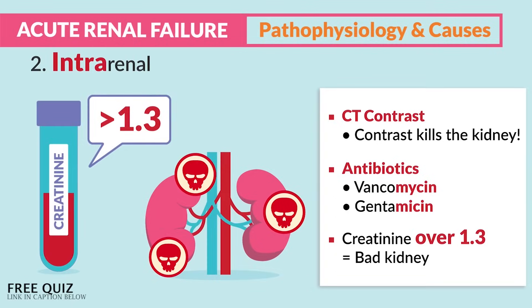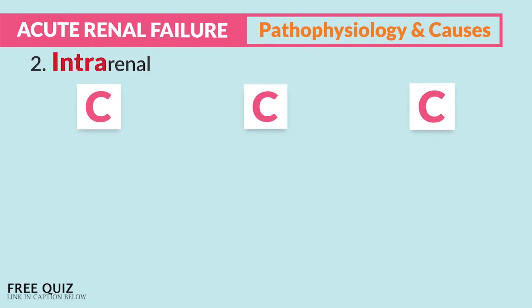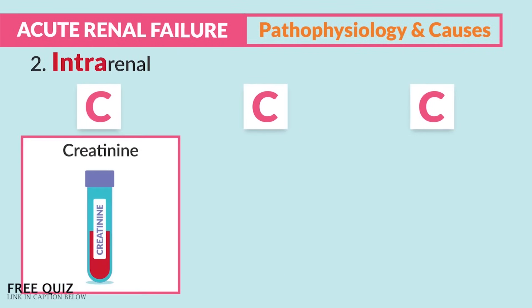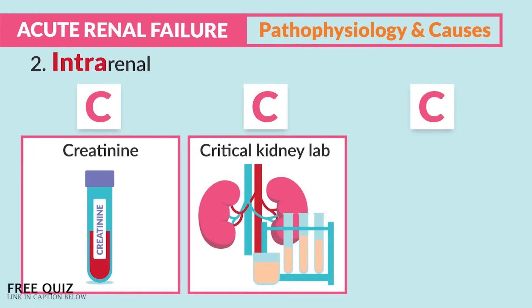When the kidneys are clogged, the creatinine lab value shoots up sky high. The key number to know is creatinine over 1.3 is bad for the kidney. The memory trick: think of the three C's — creatinine is the most critical lab value since it shows clogging of the kidneys.